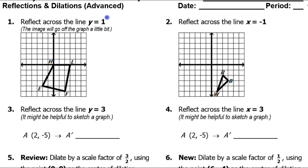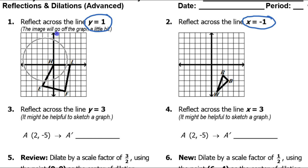Understand this: when you see a small equation like y equals a number or x equals a number, these are horizontal and vertical lines. It's the opposite of what you might think, because you know that the y-axis is vertical, but the line y equals 1 is actually going to be a horizontal line — a horizontal line at 1. Similarly, the line x equals negative 1 is a vertical line at negative 1.